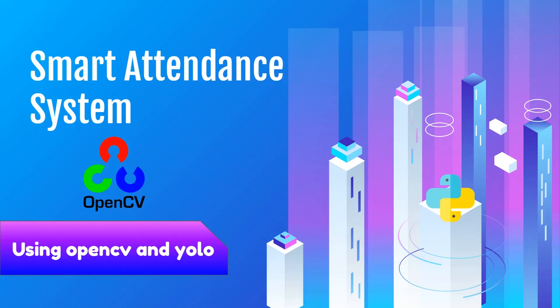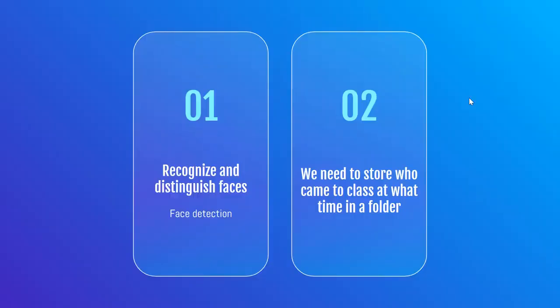The two main things we're going to be focusing on in this project are: number one, recognizing and distinguishing faces from one another — so this is basically face detection, and we're going to learn how to do face detection with OpenCV in Python. Then we are going to learn how to store who came to class and at what time in a file. So let's focus on face detection first.